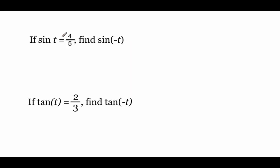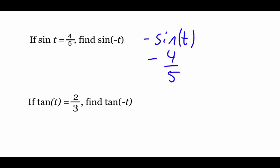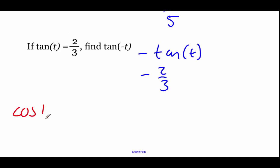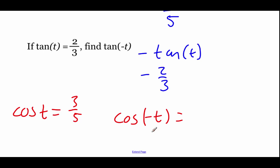Say we did the sine of some angle t and got 4/5. If we did the sine of negative t, since sine is odd, we pull the negative out in front: negative sine of t, which is negative 4/5. Similarly with the tangent — it's an odd function, so negative tangent of t. If tangent of t was 2/3, this gives negative 2/3. If we did cosine of t and got 3/5, then cosine of negative t equals cosine of t — since cosine is even, the answer is still 3/5.